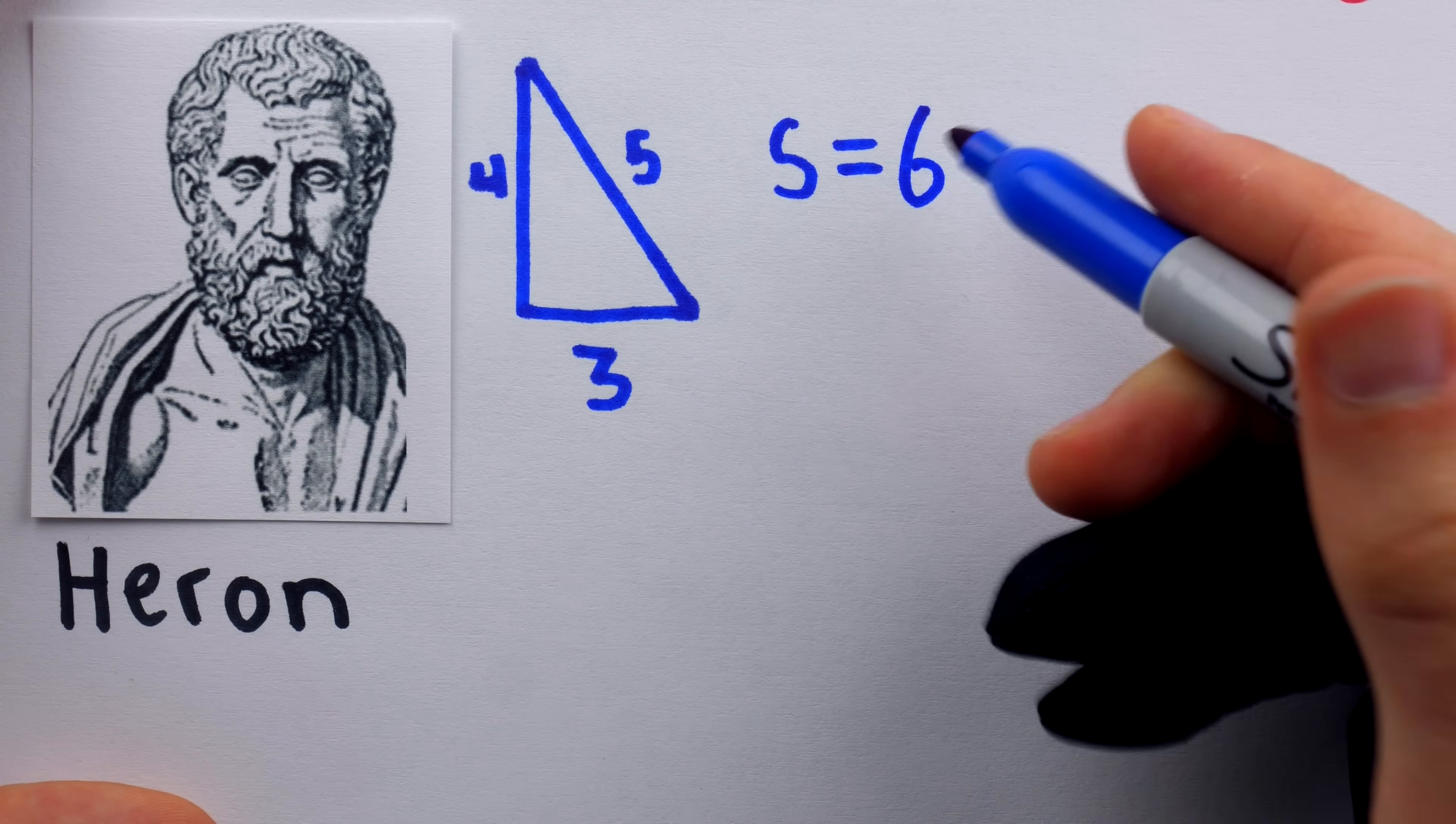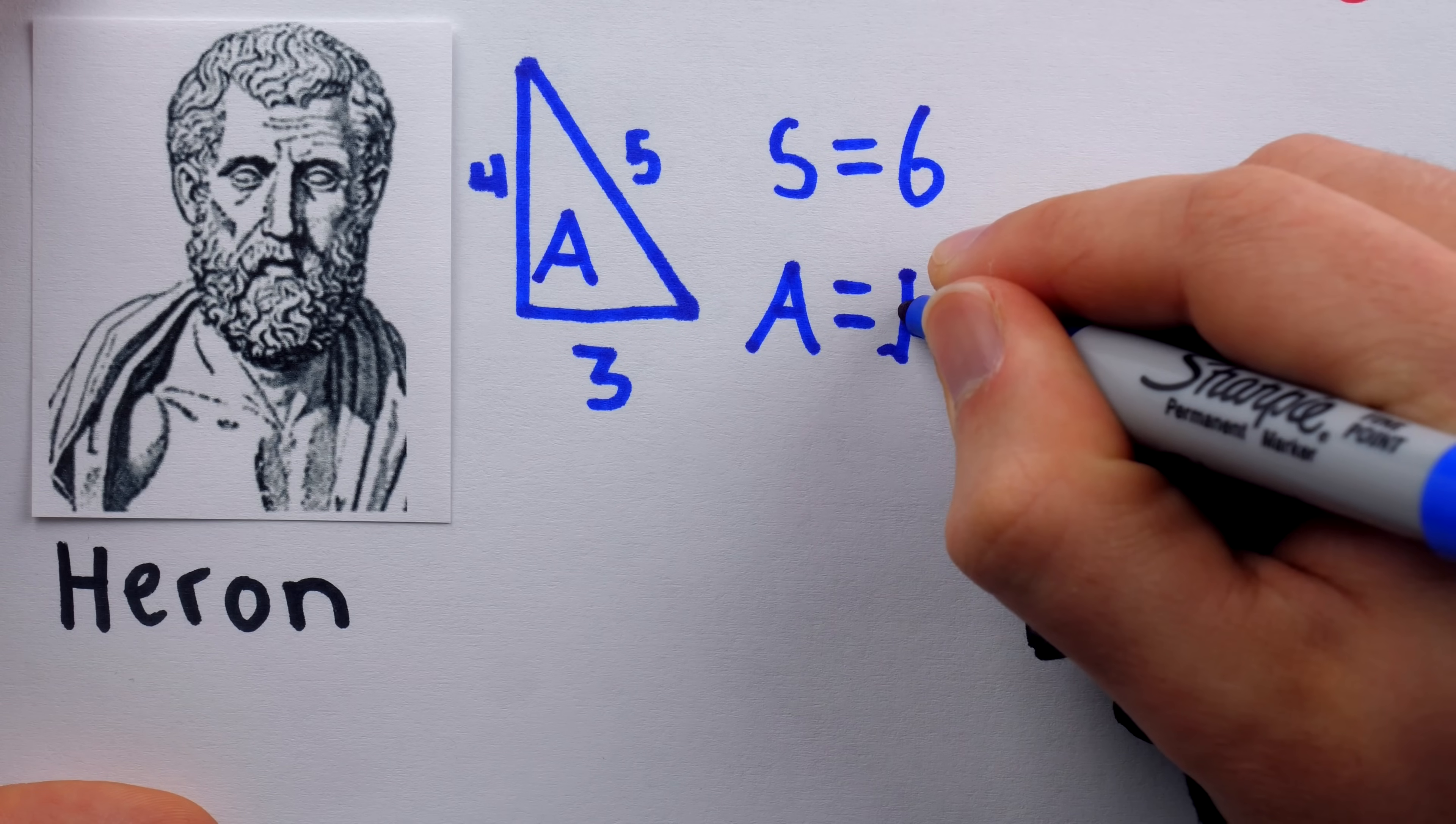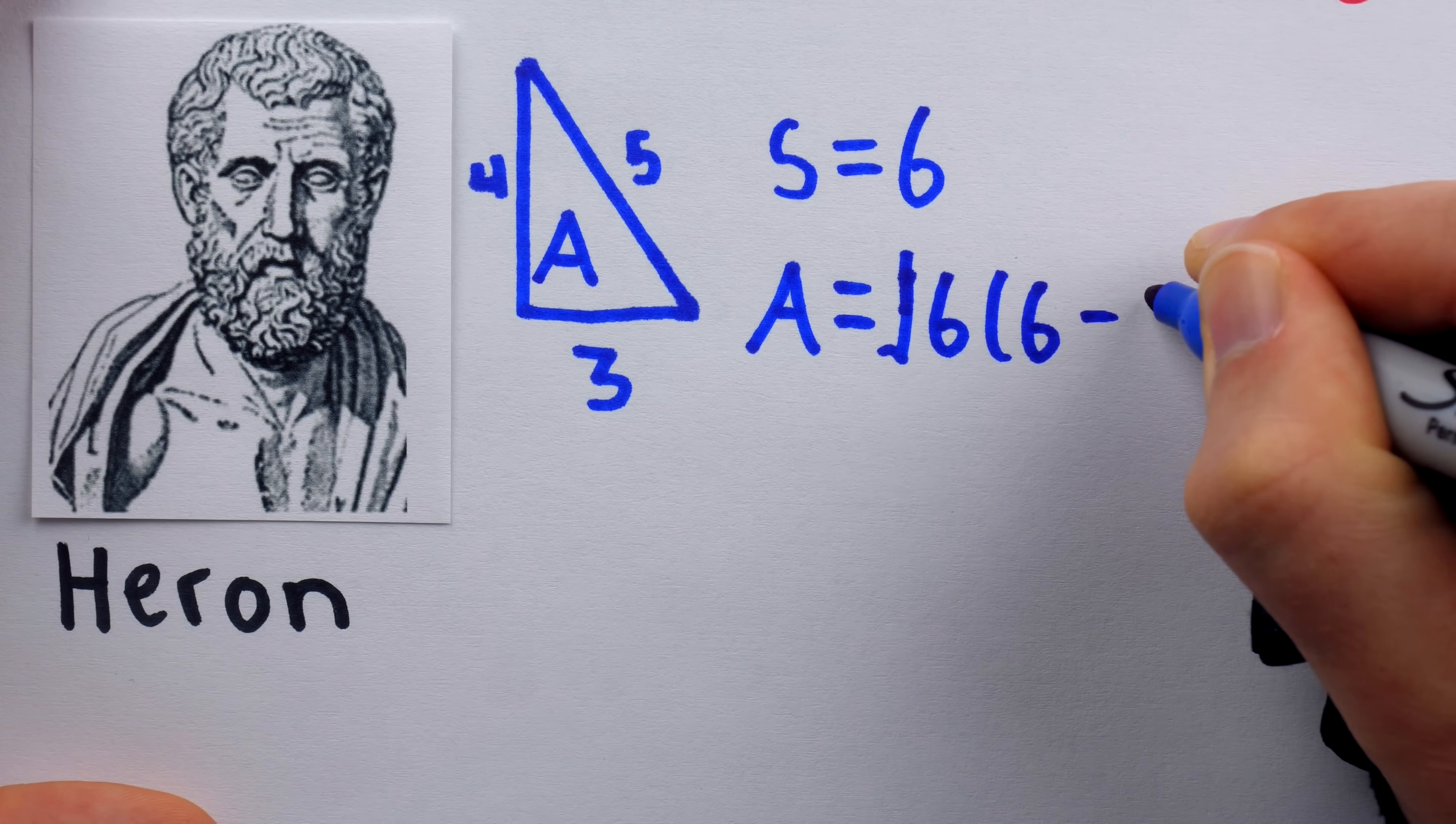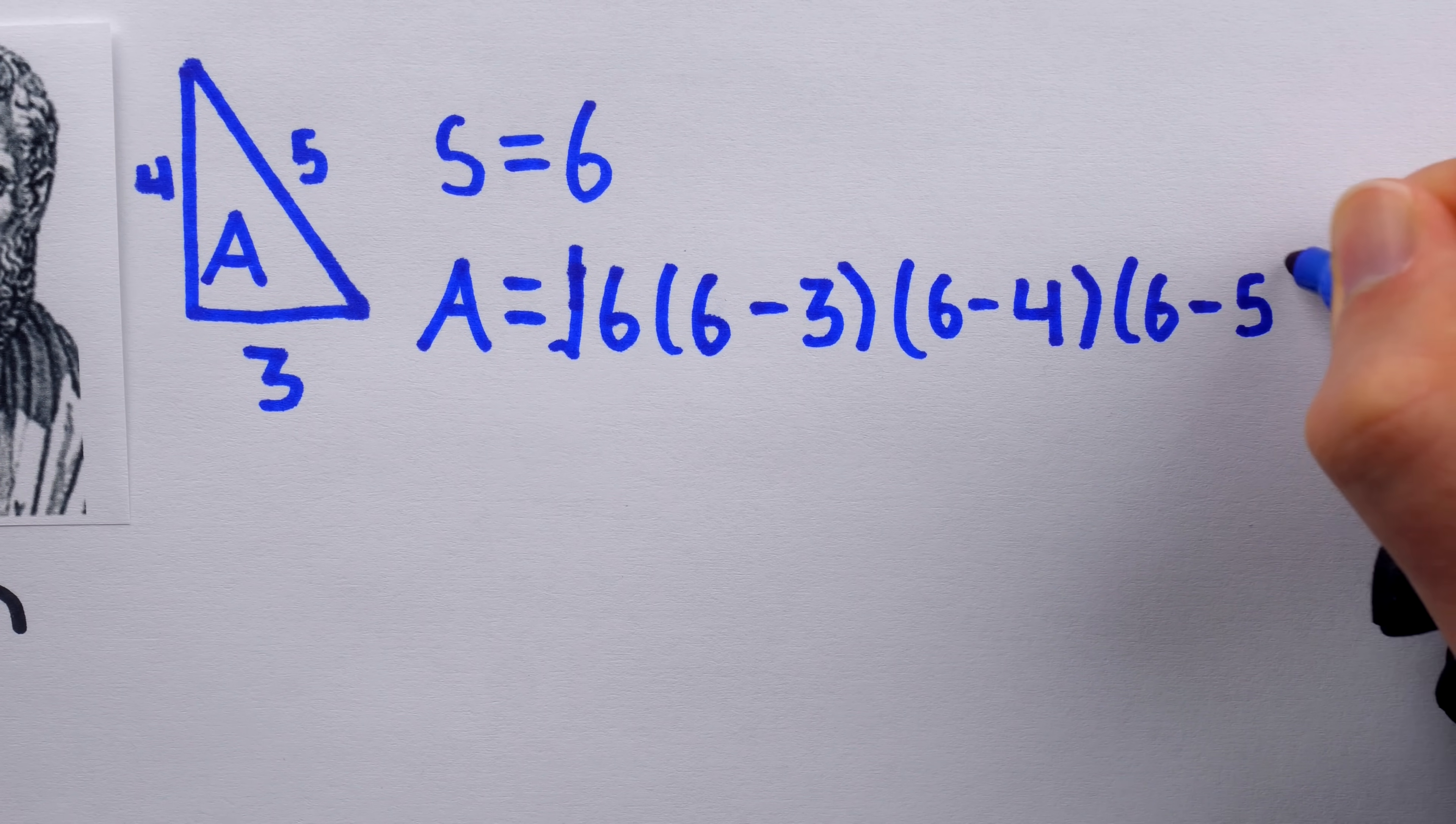The semi-perimeter is 6, and from here, it's straightforward to calculate the area. If we go ahead and call that area A, busting out Heron's classic formula, the area is the square root of the semi-perimeter multiplied by the semi-perimeter minus the first side multiplied by the semi-perimeter minus the second side multiplied by the semi-perimeter minus the third side.